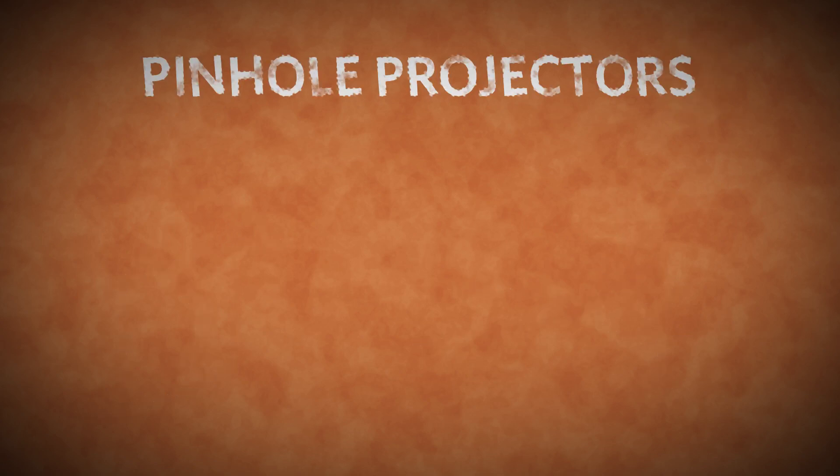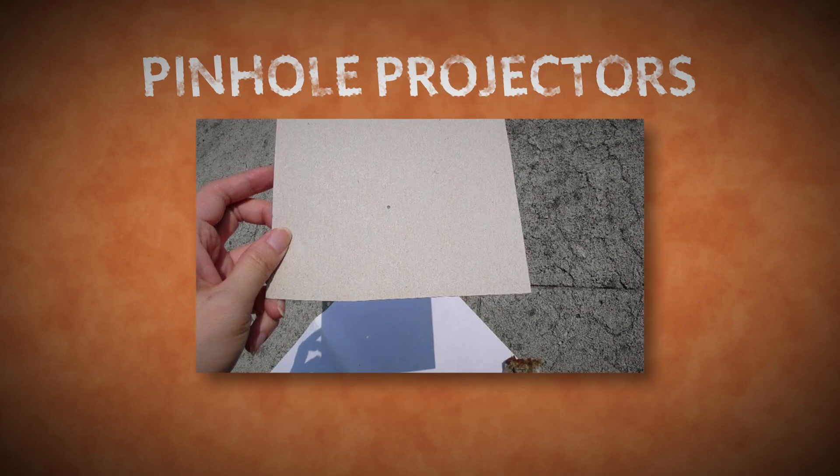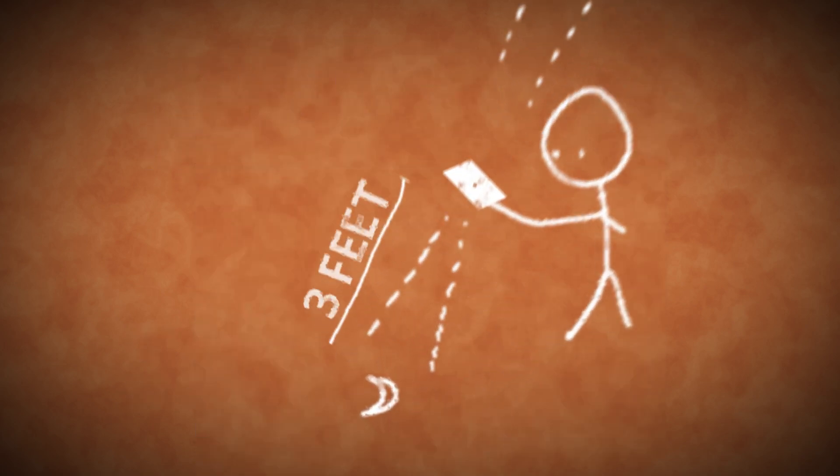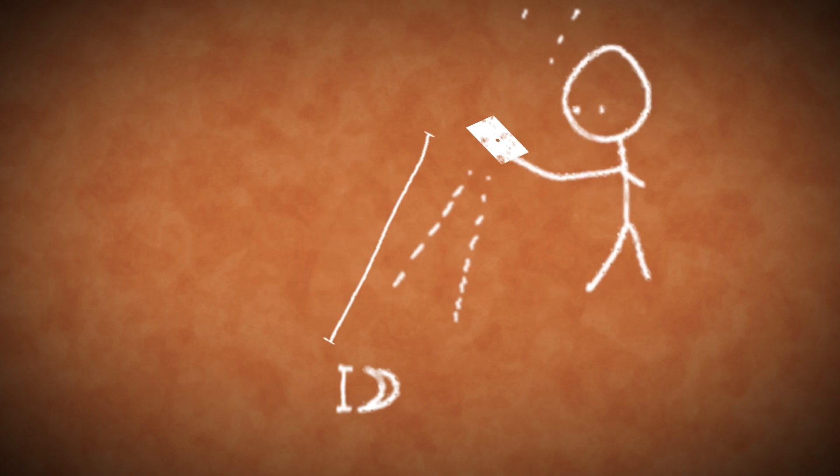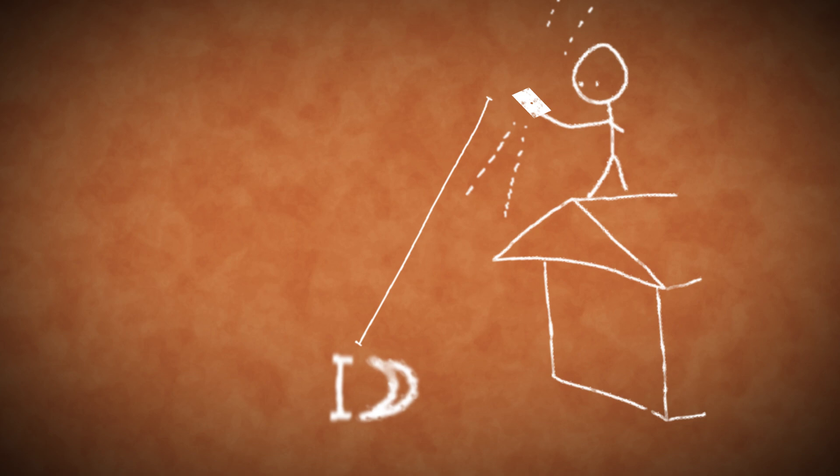Pinhole projectors work well for deep partial eclipses. Poke a round pinhole through a piece of stiff paper or cardstock, and let the sun's light shine through it onto a shaded surface, and you'll see a tiny image of the sun. If you're projecting about three feet, the image of the sun will be about a half inch in diameter. And again, the greater the projection distance, the larger the image.